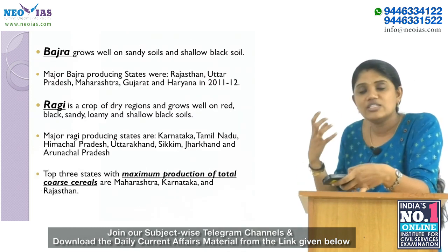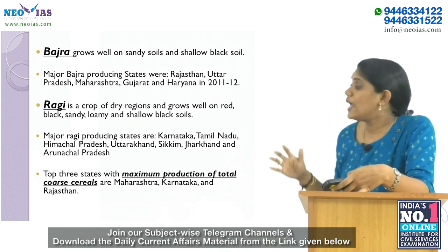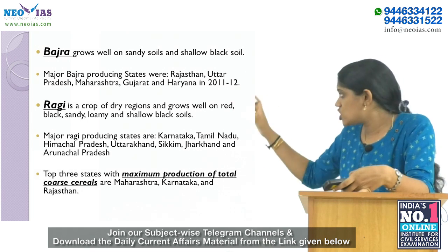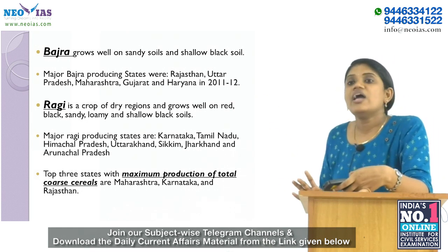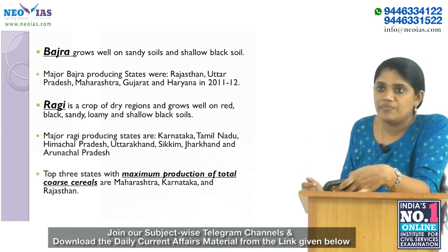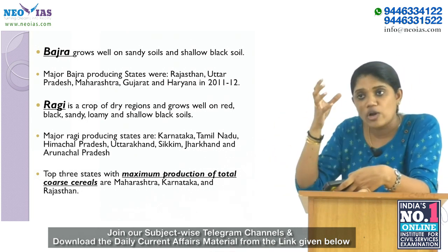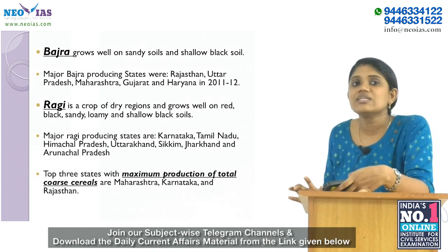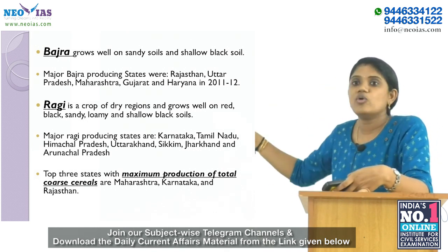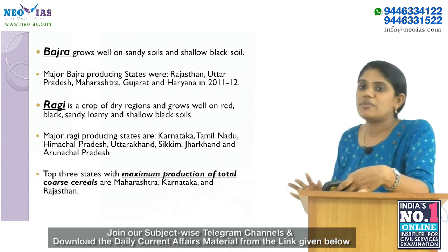Bajra grows well on sandy soil and shallow black soil. Major bajra-producing states are Rajasthan, Uttar Pradesh, Maharashtra, Gujarat, and Haryana. Ragi is a crop of dry regions and grows well on red, black, sandy, loamy, and shallow black soil. Major ragi-producing states are Karnataka, Tamil Nadu, Himachal Pradesh, Uttarakhand, and Arunachal Pradesh.